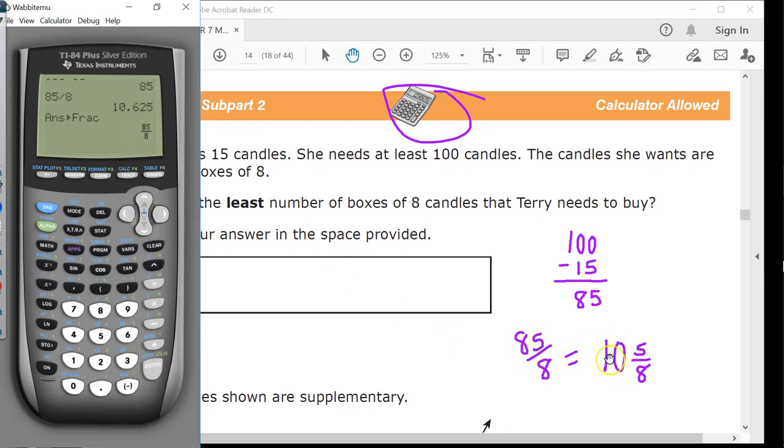And then it'll convert into this if you wanted to go even further, because, like, you know, why not, right? 10 and 5 eighths, just like I said.